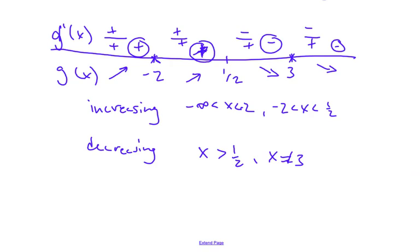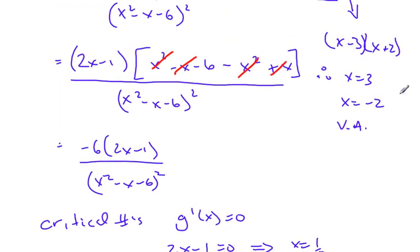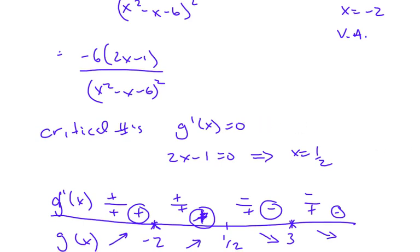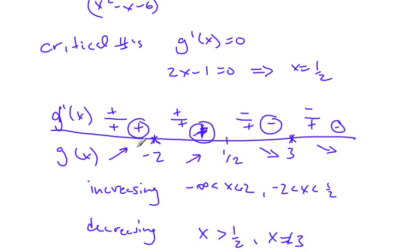To recap: find the derivative, set it equal to 0, state the critical numbers, make a number line with critical numbers and domain restrictions, find positive and negative signs for the derivative, hence increasing and decreasing for the function.